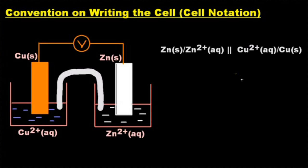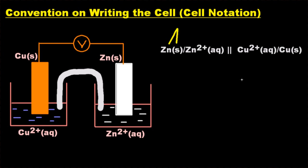The convention for writing cells or cell notation is shown on the right there, and the cell that I'm actually writing it for is on the left. Notice that the diagram on the left and the cell notation on the right don't necessarily end up being in the same order. The left-hand side has to be the anode in cell notation, and that's the oxidation half-cell, and the right-hand side has to be the cathode, which is